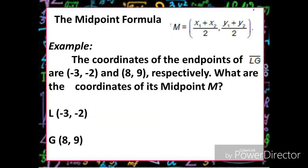We have an example. The coordinates of the endpoints of the line segment LJ are negative 2, negative 2 and positive 8, positive 9, respectively. What are the coordinates of its midpoint M?